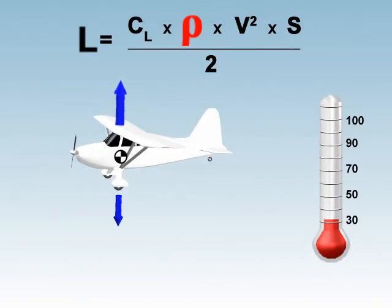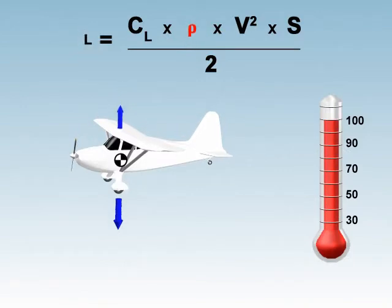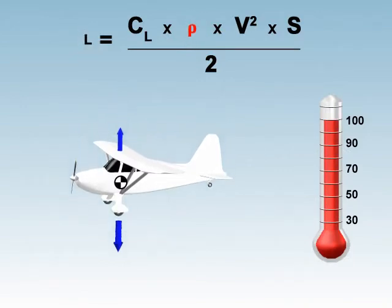The opposite is true for hot summer days, where air density is low, suggesting a smaller number for density in the lift equation, thus resulting in little lift.